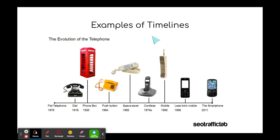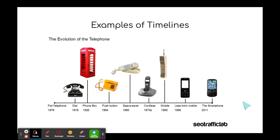This is the evolution of the telephone. The first telephone was in 1876, and it goes on to show the different telephones as they evolved. This one ends in 2011. Think about what a cell phone may look like now in 2021.